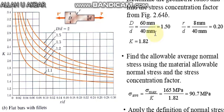From these D by d and r by d values, we will use the graph to find the value of K, the stress concentration factor. We have D by d equals 1.50.